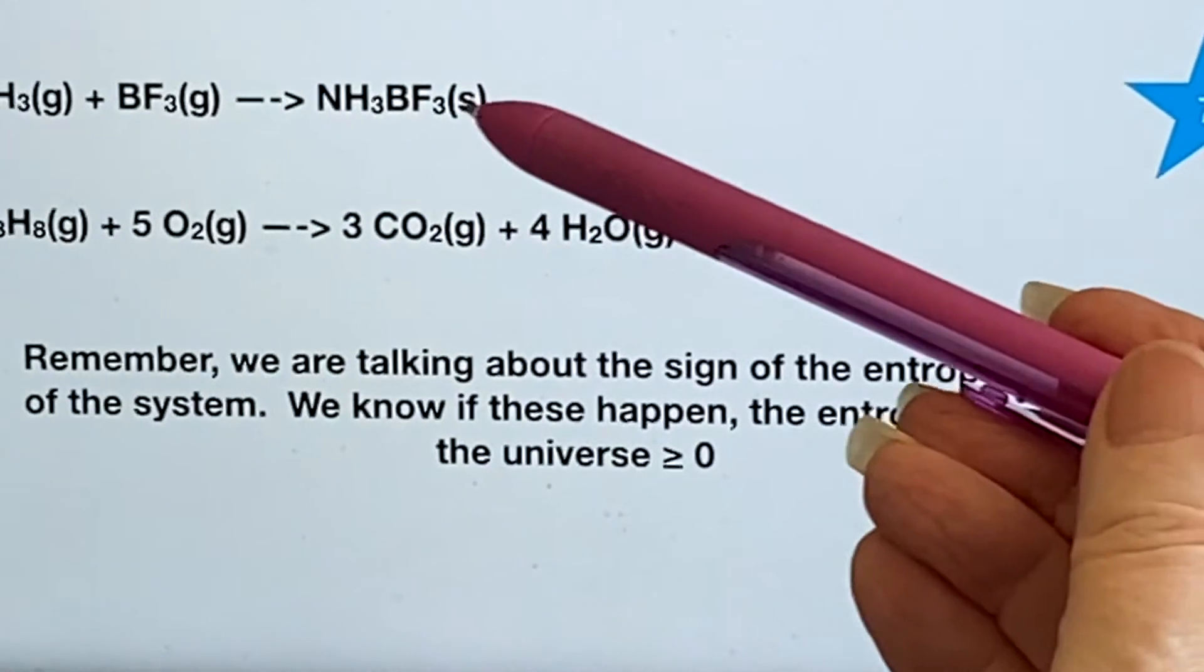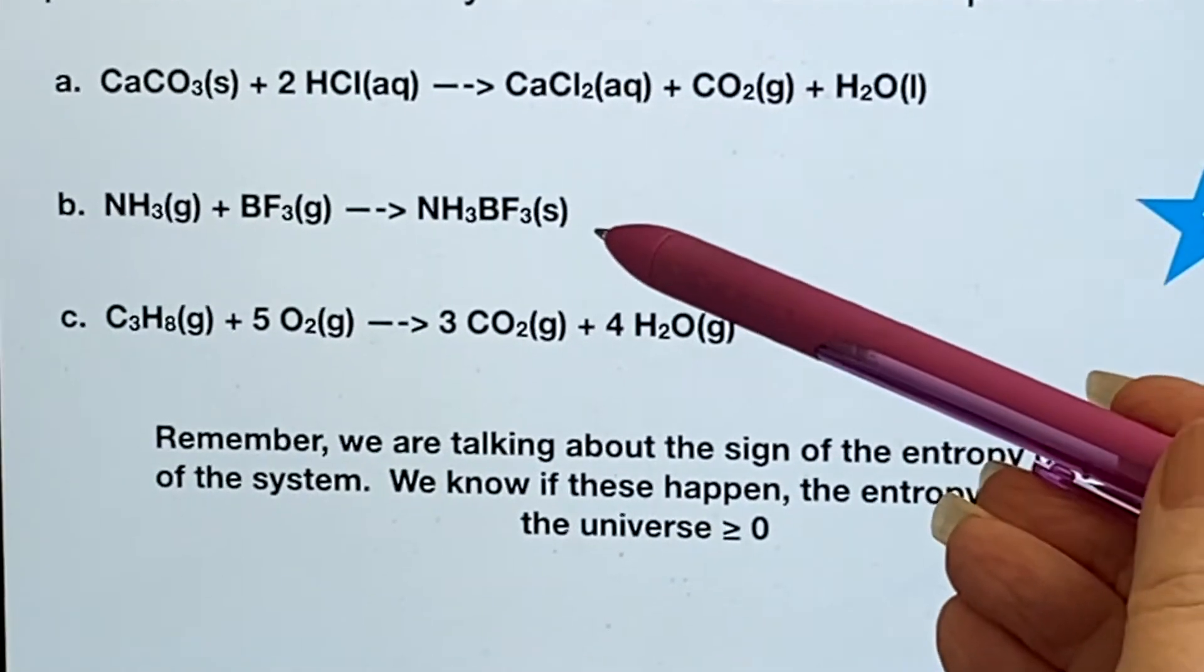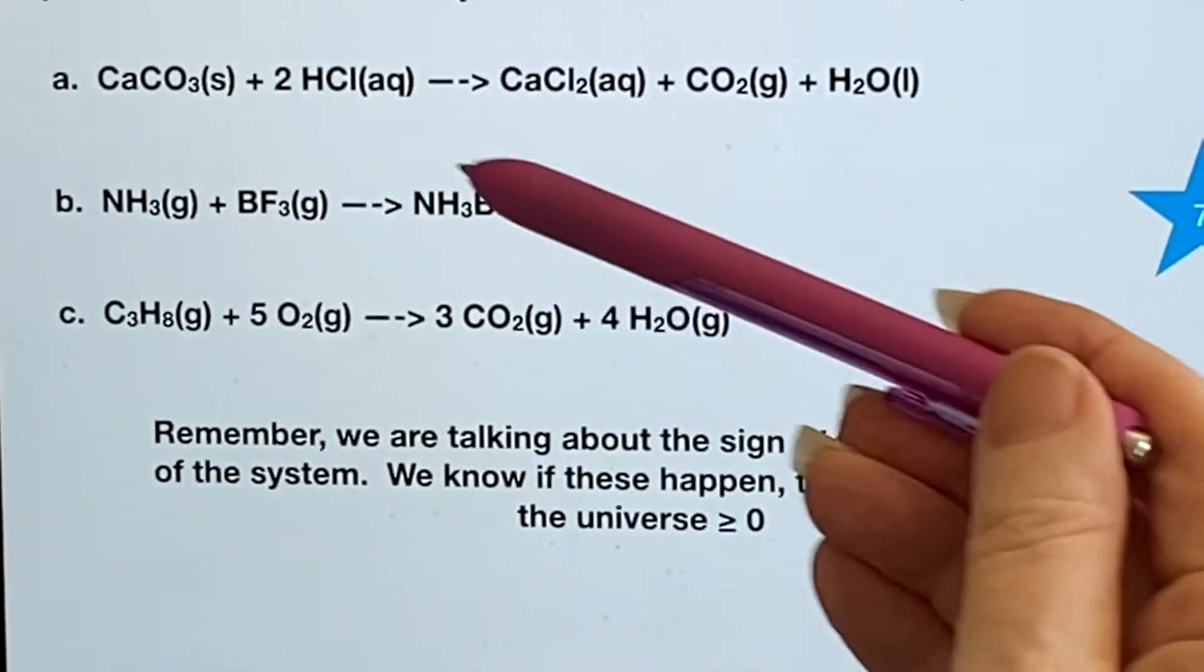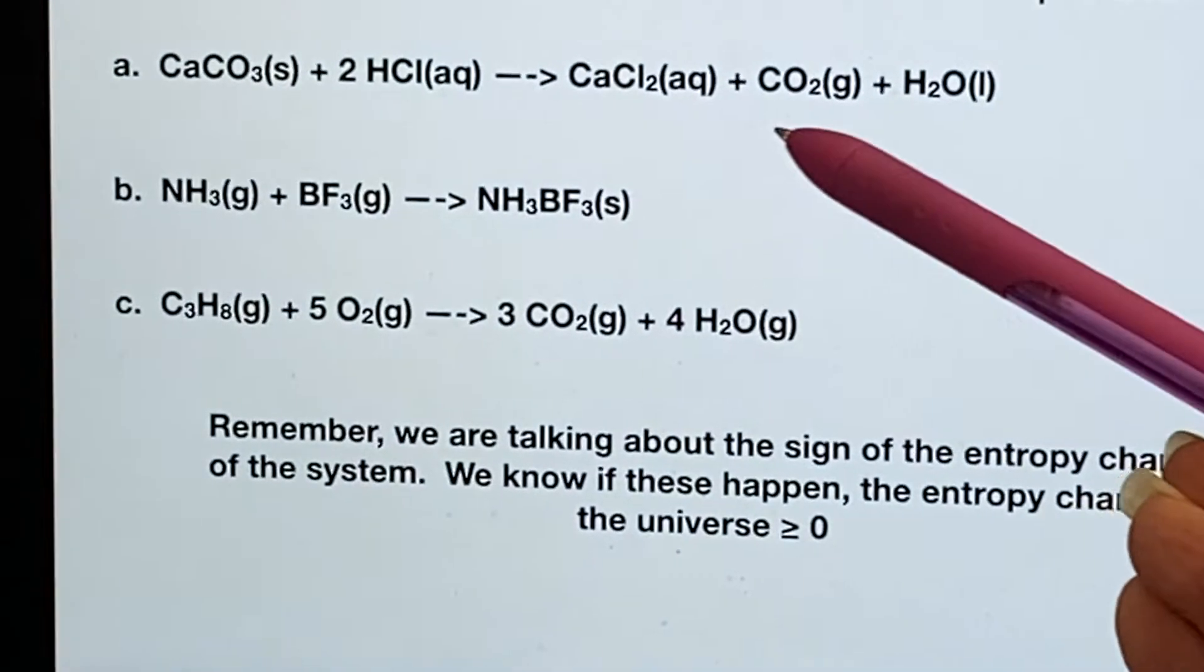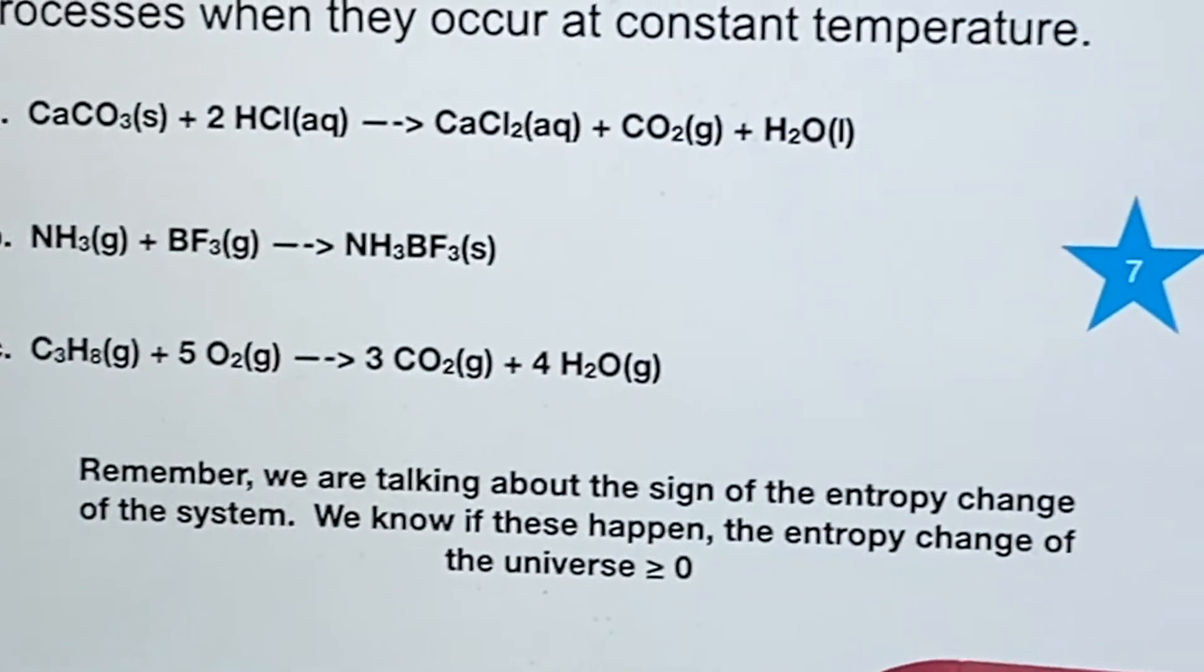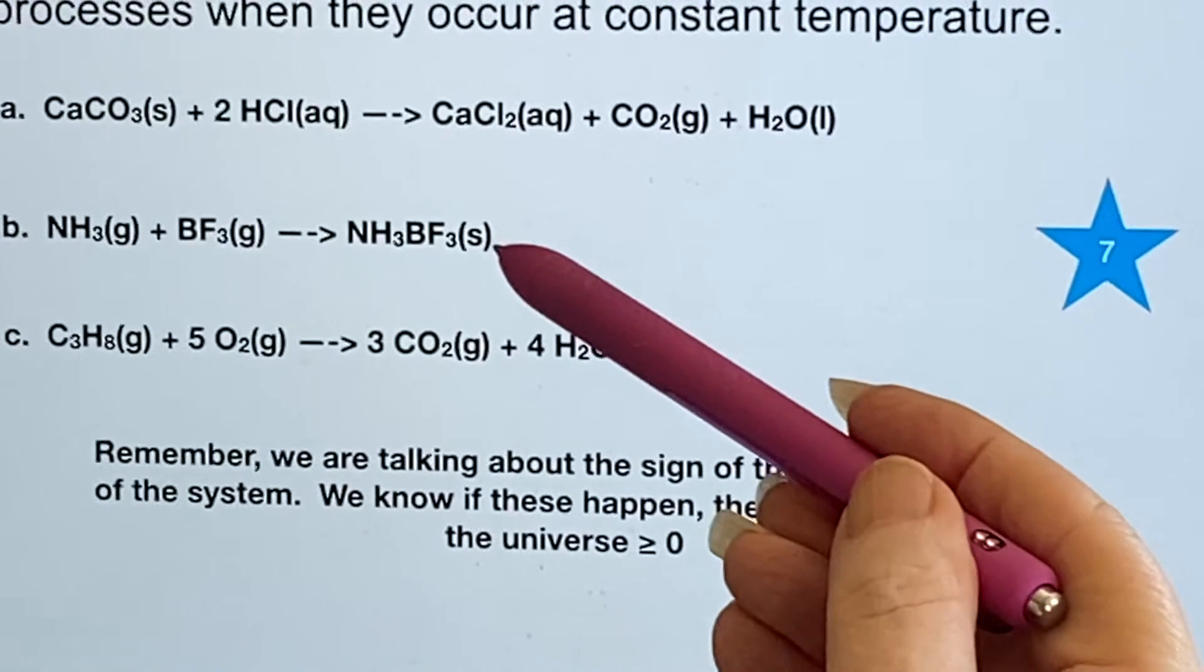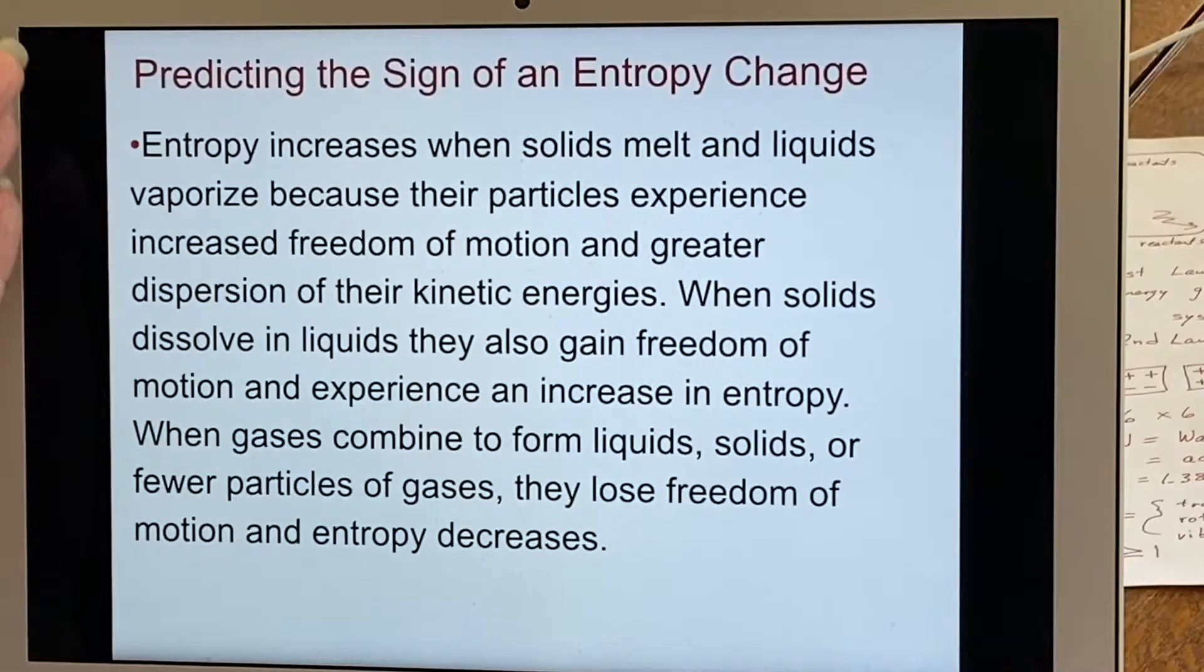So even something where the entropy is going down, that's local. That's in this particular system. The entropy went down, but the entropy of the rest of the universe must have increased because overall the entropy of the universe has to go up. So this system, it went down, its surroundings went up. When we're doing these predictions,